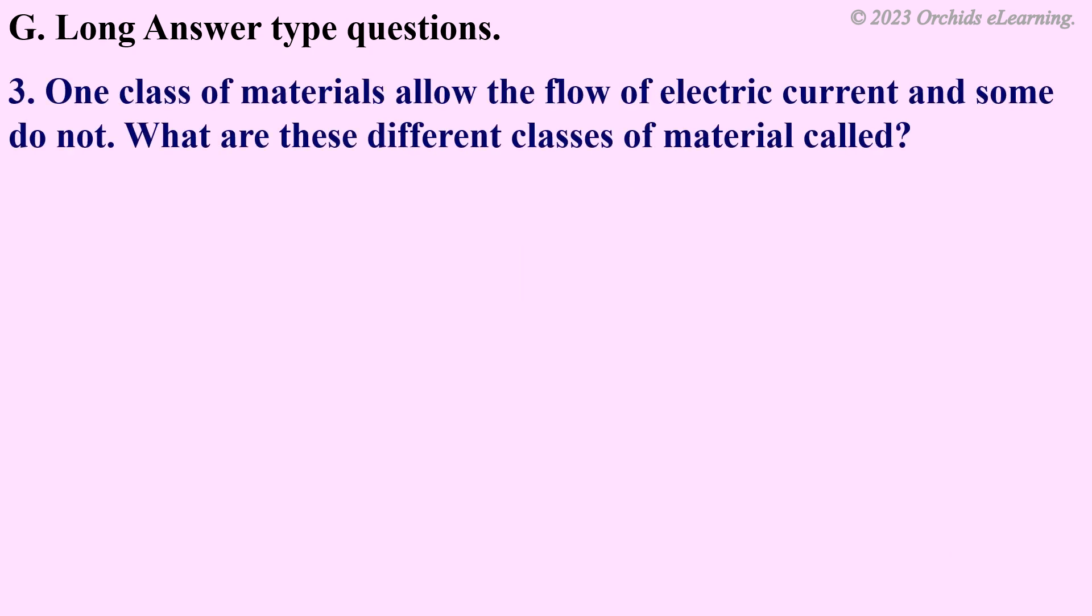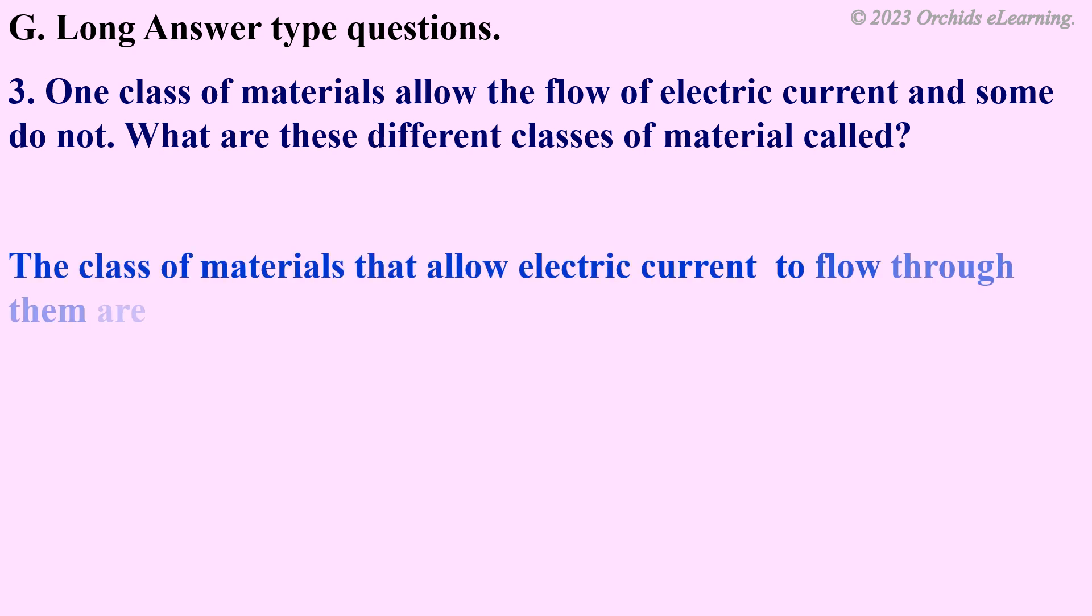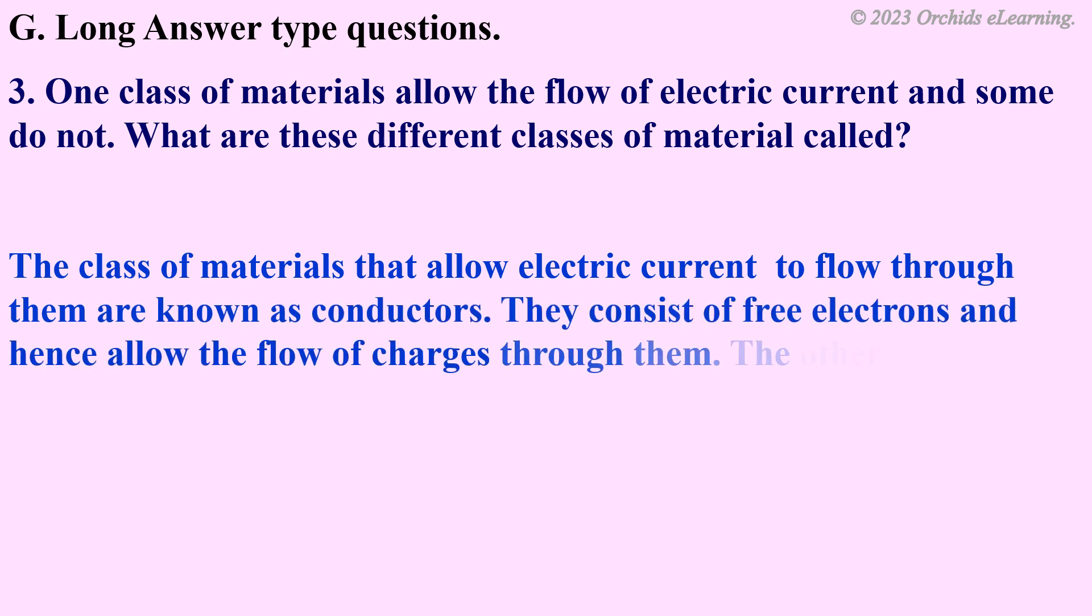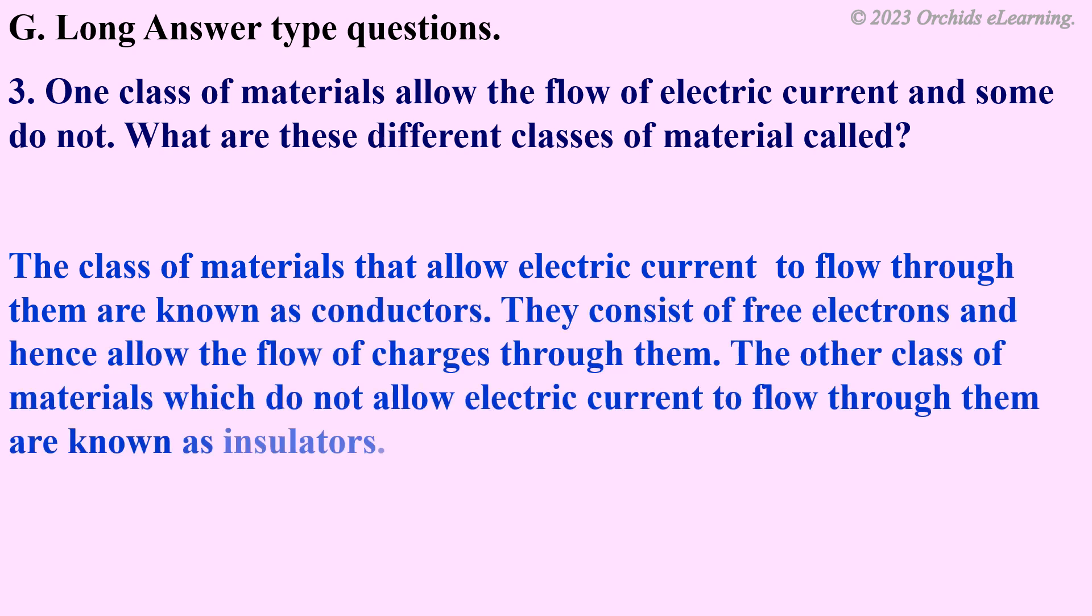One class of materials allow the flow of electric current and some do not. What are these different classes of material called? The class of materials that allow electric current to flow through them are known as conductors. They consist of free electrons and hence allow the flow of charges through them. The other class of materials that do not allow electric current to flow through them are known as insulators.